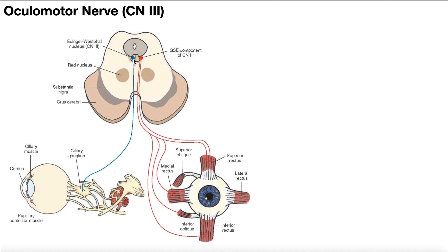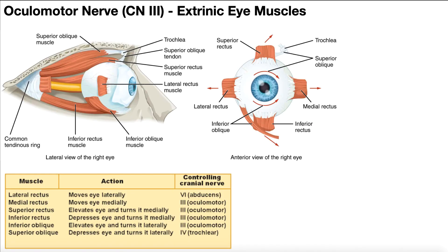This one here in blue is called the Edinger-Westphal nucleus — this is the part that's going to be parasympathetic in the next video. Then over here in red, we have the GSE component of cranial nerve 3, which stands for general somatic efferent. Somatic means this is going to be voluntary contraction of muscles associated with the eye — specifically the extrinsic eye muscles, which are voluntary muscles that move the eyeball within the orbit.